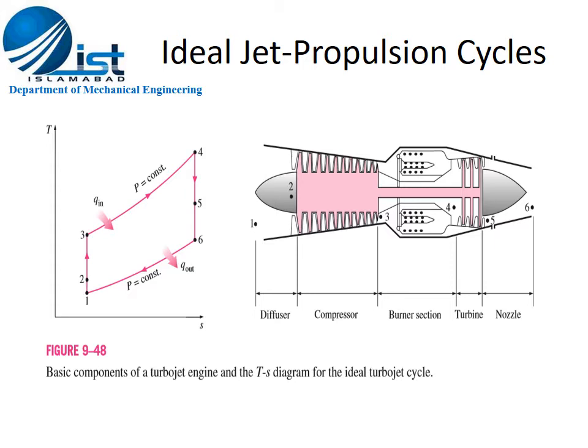Process 2 to 3: the air is compressed in a compressor, which may be an axial or centrifugal type. So 2–3 is a compression process. Process 3 to 4 is a constant-pressure heat addition process, where air is heated using a combustion chamber or burner section. Process 4 to 5: the air is expanded in the turbine to obtain power to drive the compressor — this is the turbine expansion process.